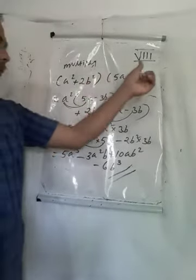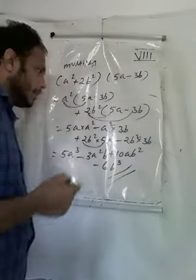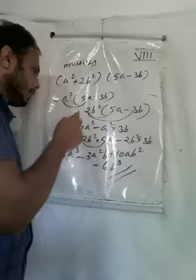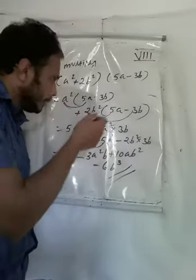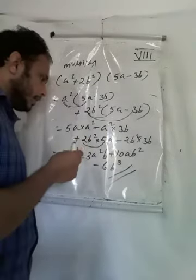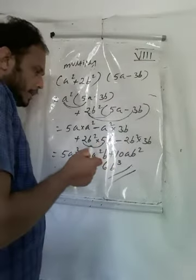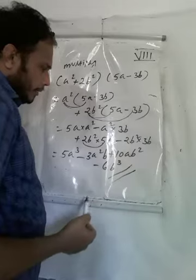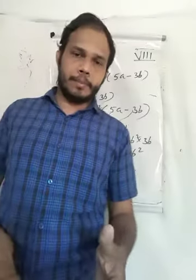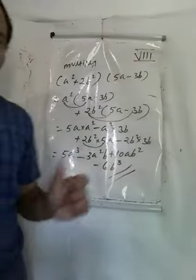This is the final product: 5a cubed minus 3a squared b plus 10ab squared minus 6b cubed. So this is very simple — a squared plus 2b squared into 5a minus 3b. Multiply a squared with each term, then 2b squared with each term. All terms are unlike terms, so you write the final product like this.